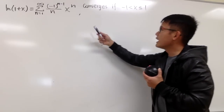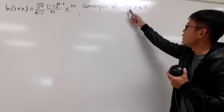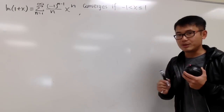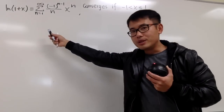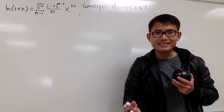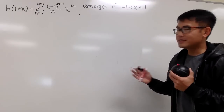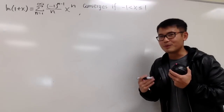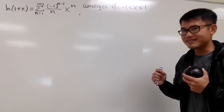This series converges when x is between negative 1 and 1, but x cannot equal negative 1. If you want to see how we derive this, I will have the link to that video in the description. Our focus today is to use this and come up with a nice identity — in fact, two of them.